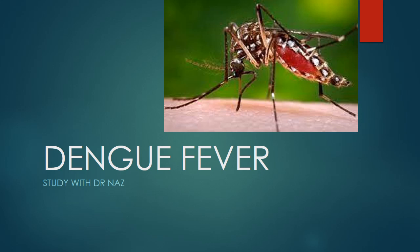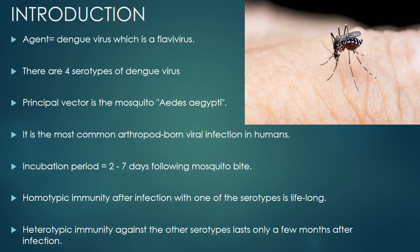Hello everyone, welcome to my YouTube channel. This is Dr. Nars, and today we will be discussing dengue fever. Dengue virus is a flavivirus, which is an RNA virus. There are four serotypes of dengue virus. The principal vector is the mosquito Aedes aegypti and Aedes albopictus, mostly Aedes aegypti.